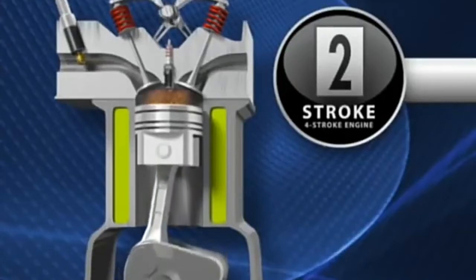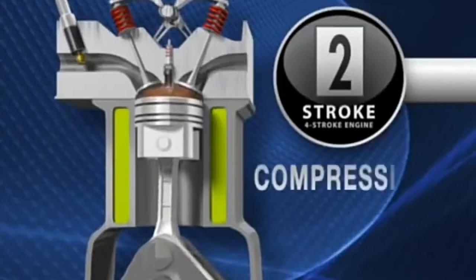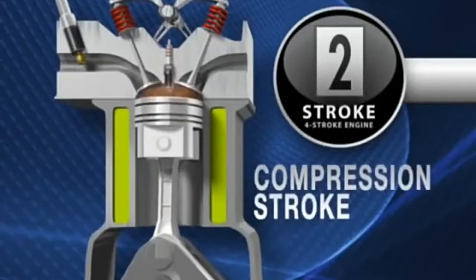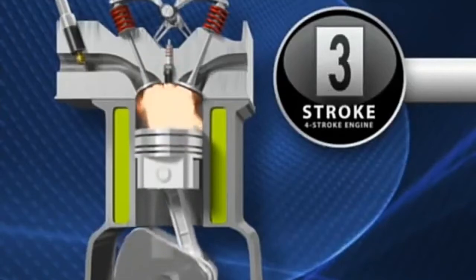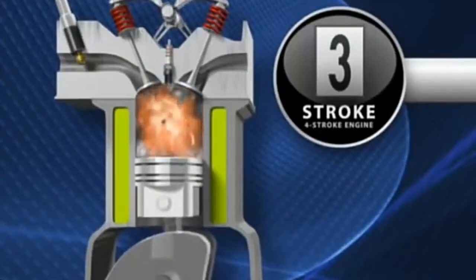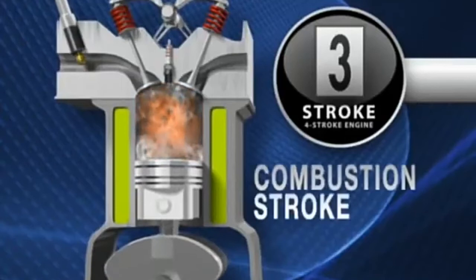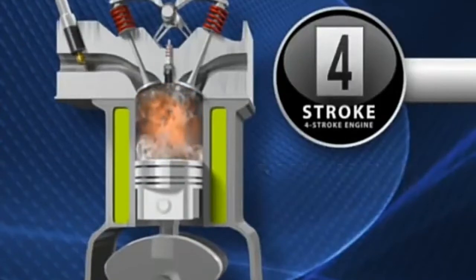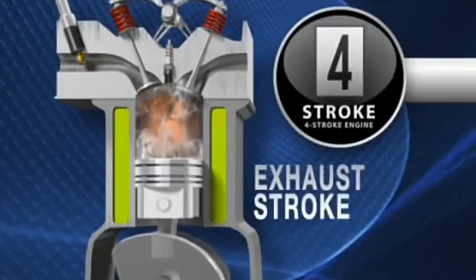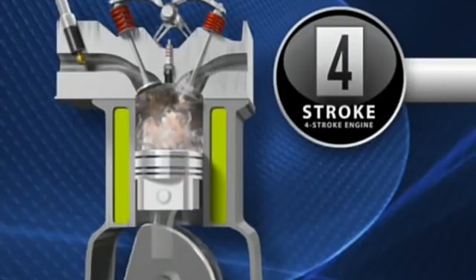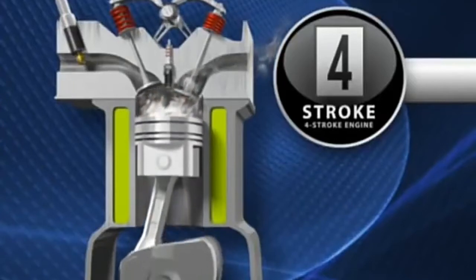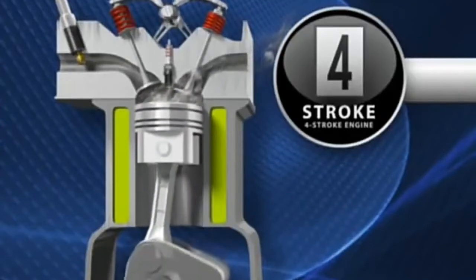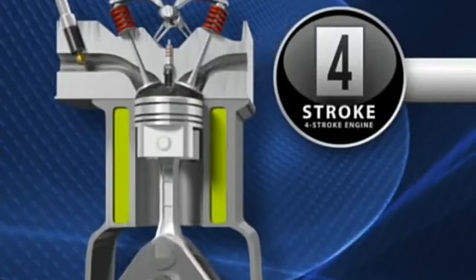We then initiate the combustion by providing a spark from the spark plug situated in the center of the combustion chamber. The combustion stroke is complete when the piston moves from TDC to BDC. The last stroke is the exhaust stroke, where the burnt gases are expelled from the combustion chamber by opening the exhaust valve. This completes the four-stroke cycle, and it will repeat again and again.